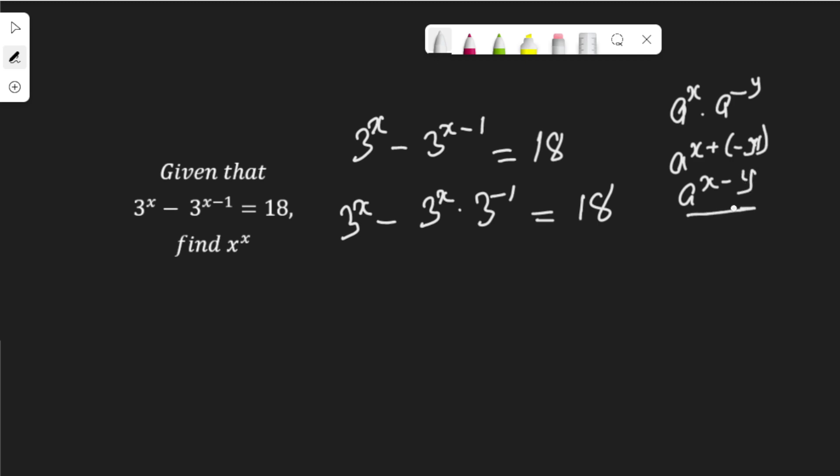So our question is like this, I turn it into something like this. That is exactly what I did here. Now we know that a to the power of negative n is 1 over a to the power of n. So I'm going to apply it here so that my equation becomes 3 to the power of x minus 3 to the power of x times 1 over 3 equal to 18.